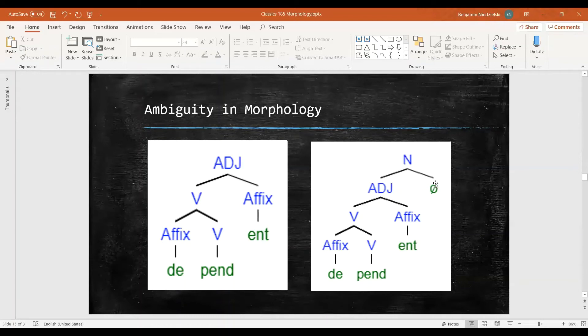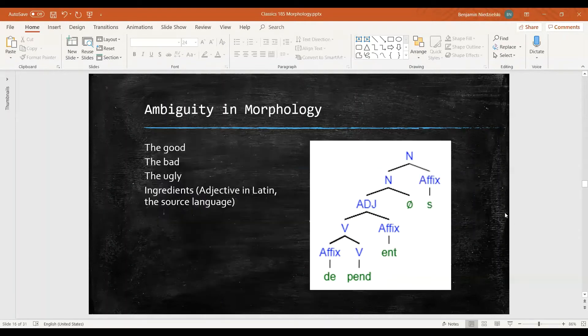To turn this into a noun though, we're going to take our adjective dependent and we're going to add this. This is not pronounced, but it turns the word into a noun. Dependent can be both an adjective or a noun, but with different structures. Now you may be thinking, if this is not pronounced, then what evidence do we have for these different structures?